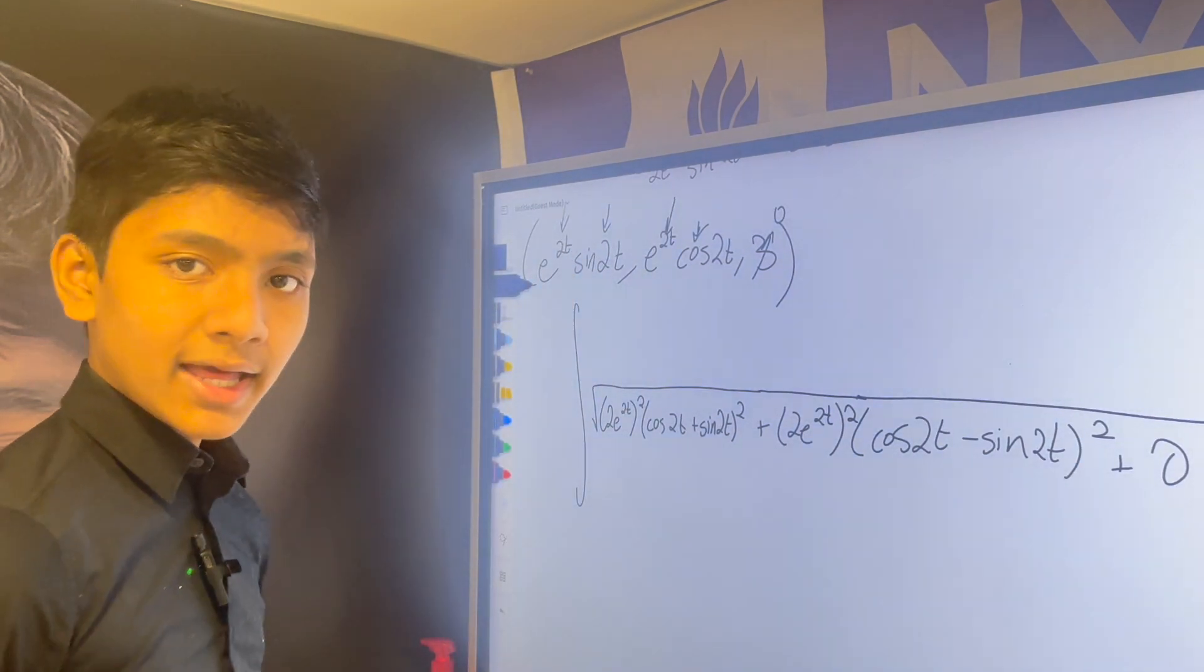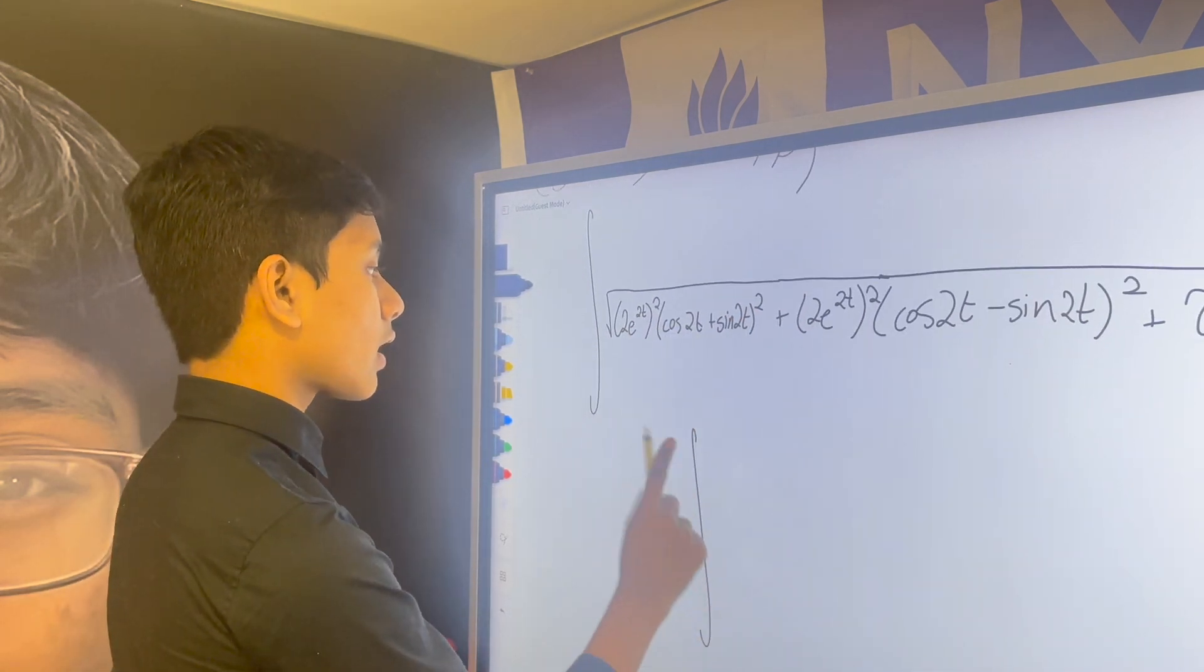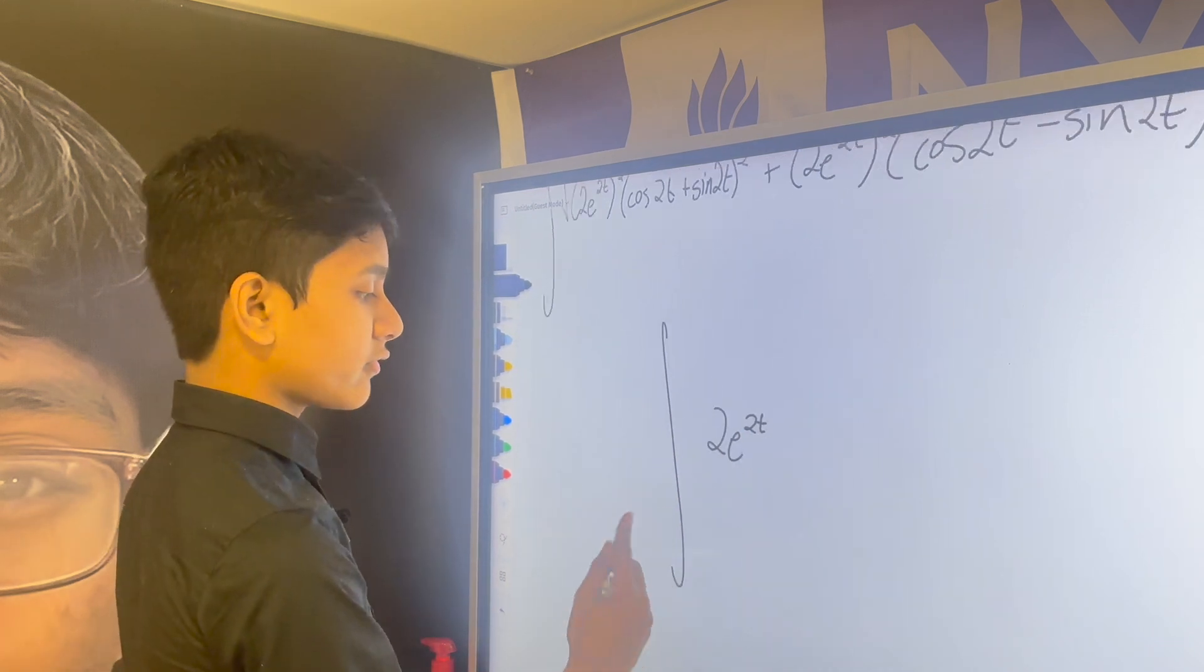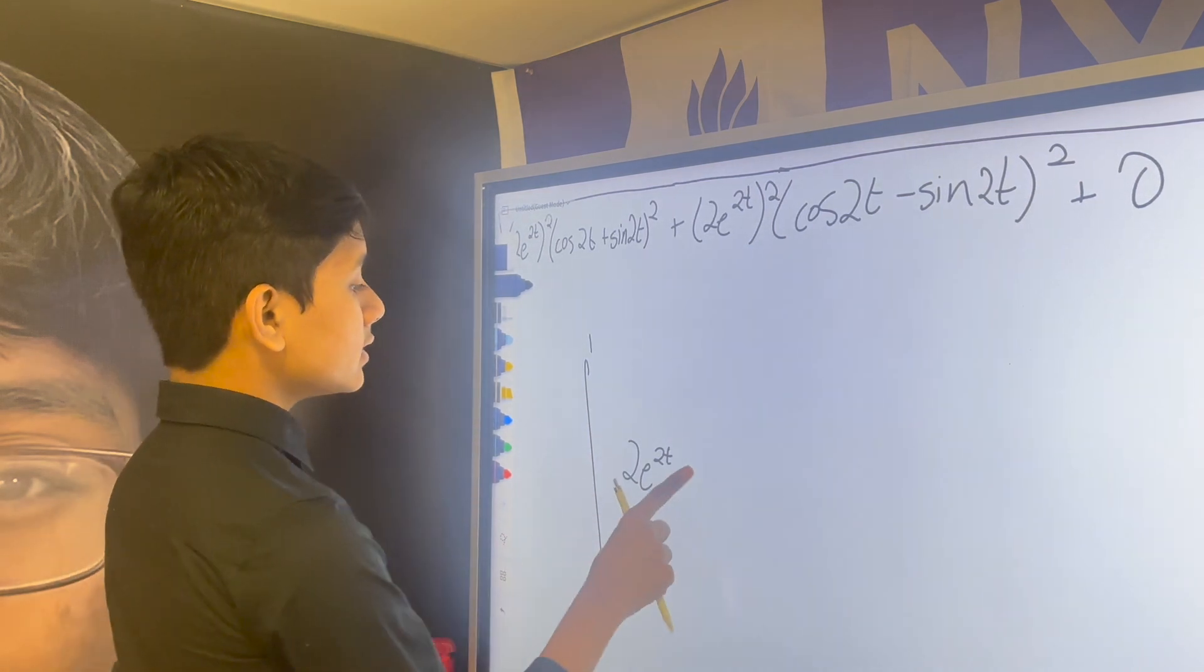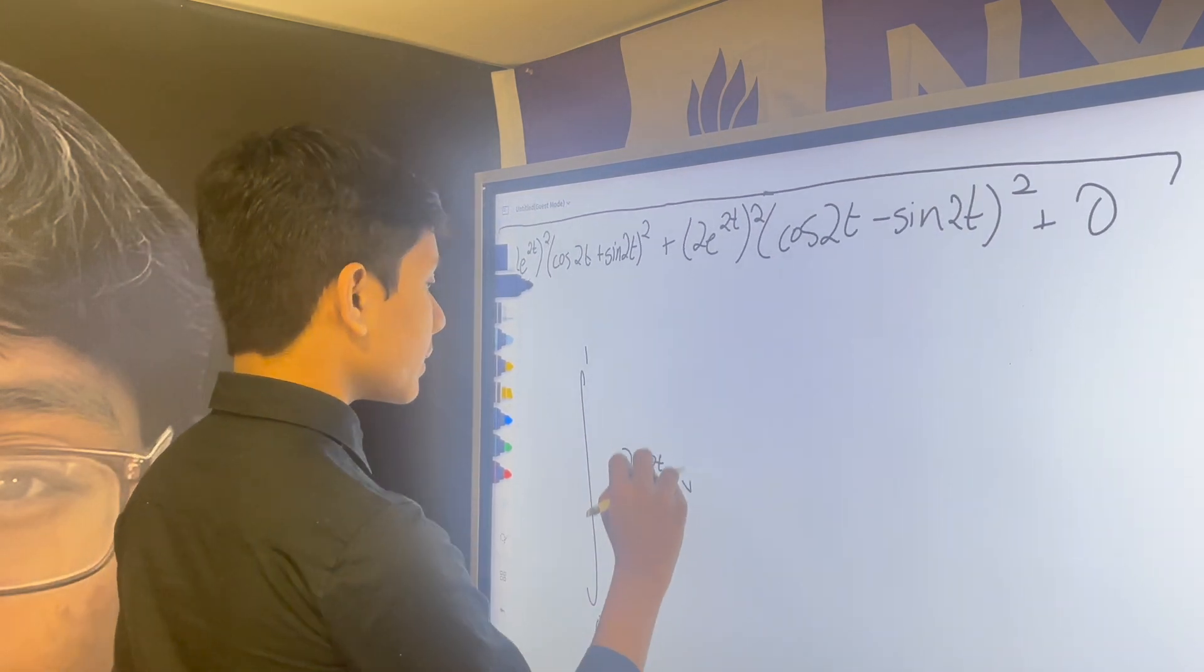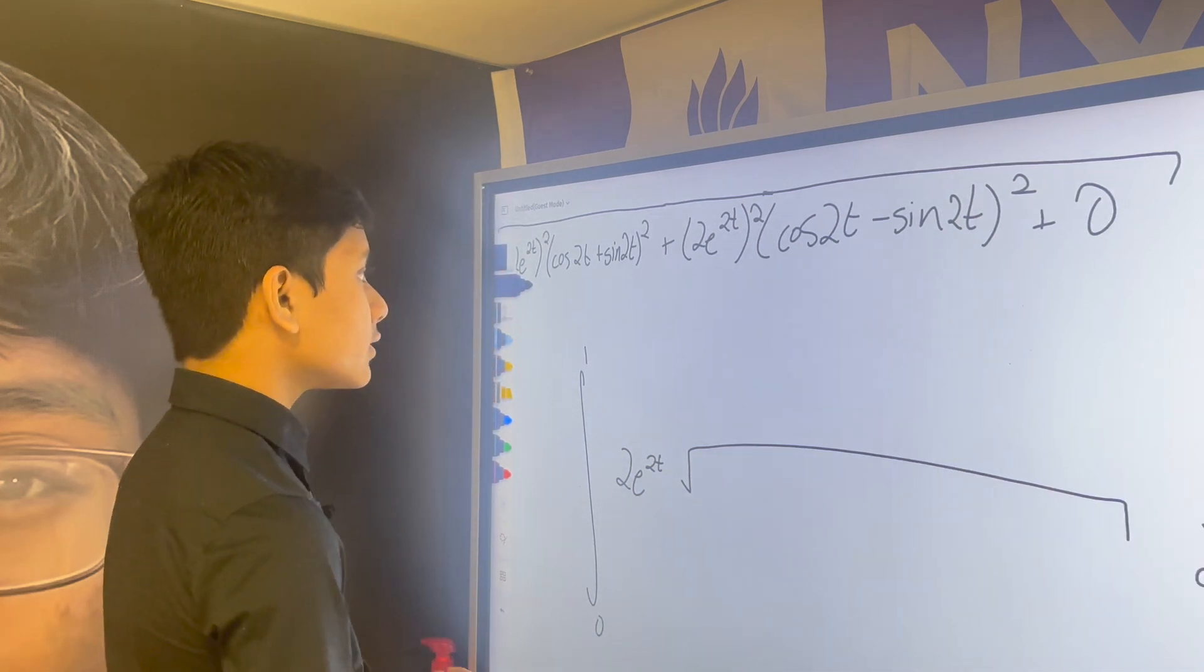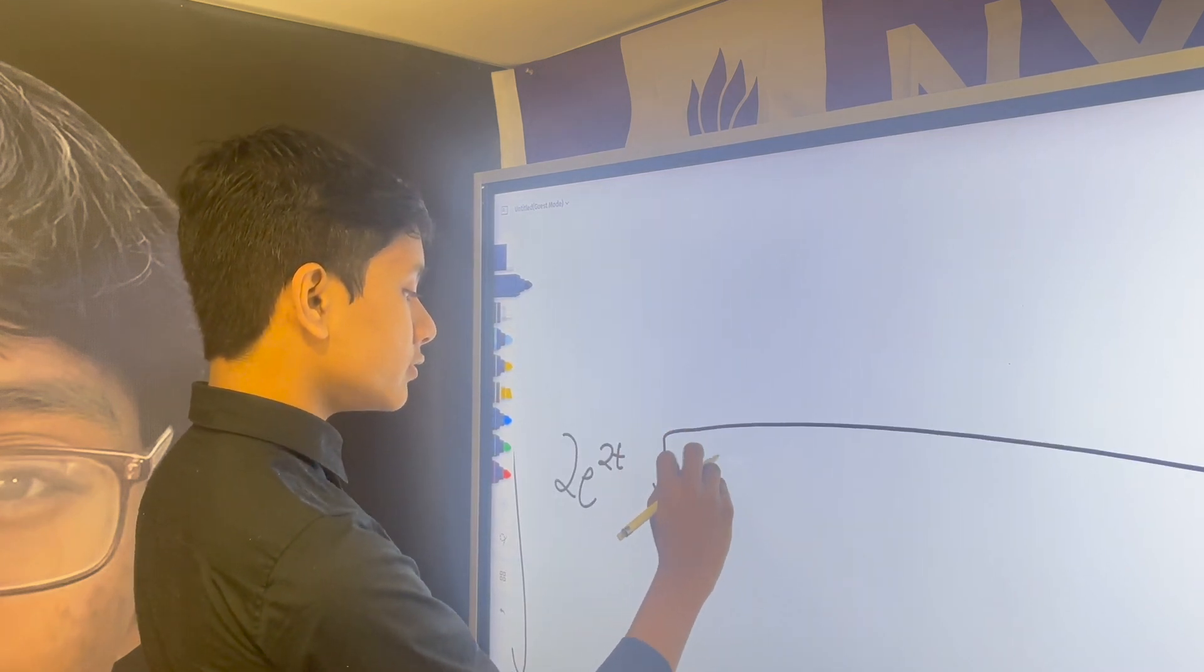So, what do we get? We can already factor out the 2e^2t and let's add some bounds to our integral for fun. Let's say zero to one for t. So, we get 2e to the 2t multiplied by the square root of, well, what's inside this?